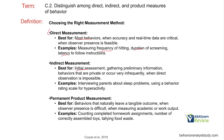Indirect measurement is best for initial assessments — those intake interviews, surveys, and similar things where you're just gathering information. You should do indirect assessments every time you talk to a stakeholder or the client. Use it for behaviors that are private — thoughts and feelings that we can't see but can at least discuss — and when direct observation is impossible, such as interviewing parents about sleep problems or using a behavior rating scale for hyperactivity. Permanent product measures behaviors that naturally leave a tangible outcome — when observer presence is difficult, or when measuring academic or work output such as completed homework assignments, number of assembled toys, or food waste.